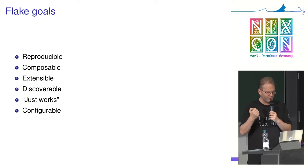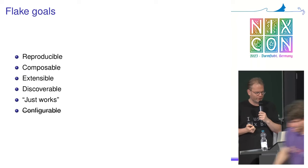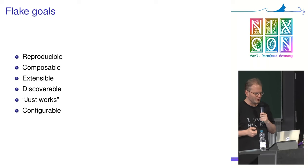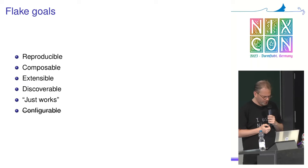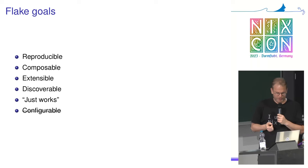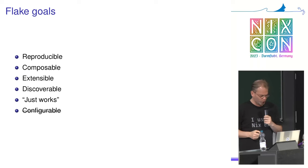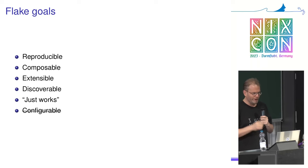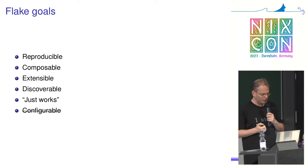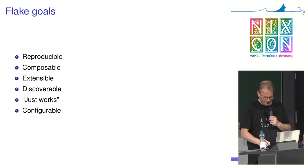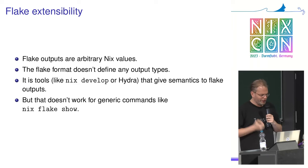Reflecting on flake goals: they're supposed to ensure reproducibility - if two people clone a flake git repo and evaluate or build it, they should get the same result, without environment variables or configuration flags affecting the outcome. That works pretty well. They should be composable - that's the dependency mechanism, which works well. They should be extensible and discoverable - I'll come back to those. And they should just work: if you clone a repo you should be able to do `nix build` or `nix develop` without configuring anything.